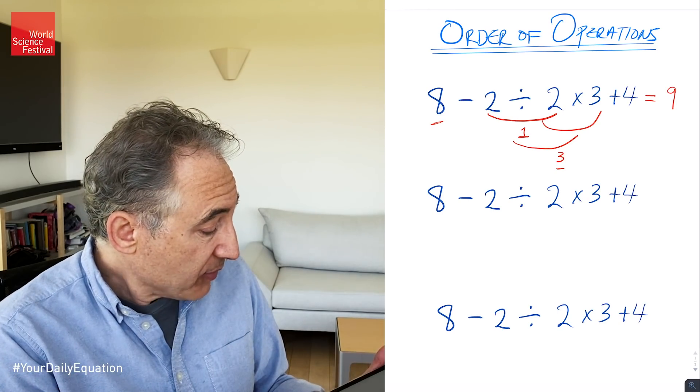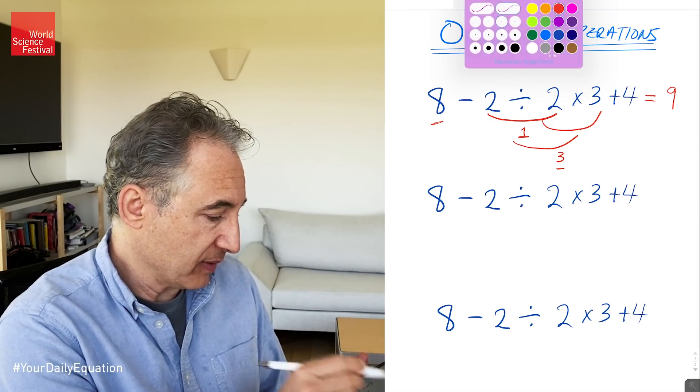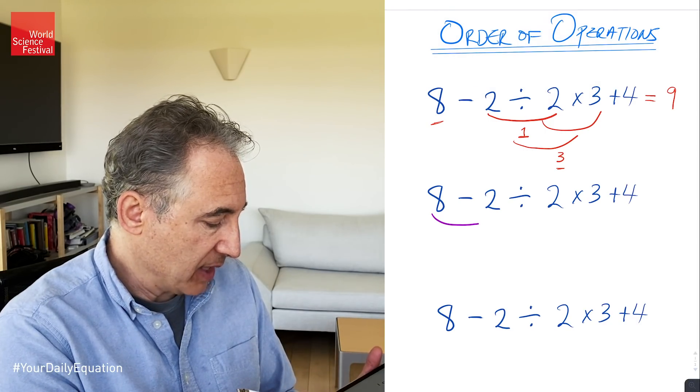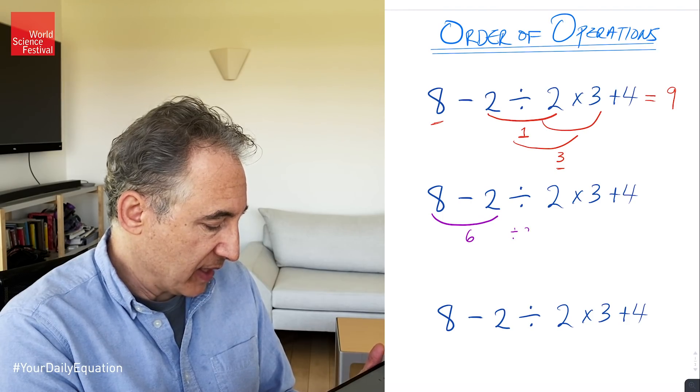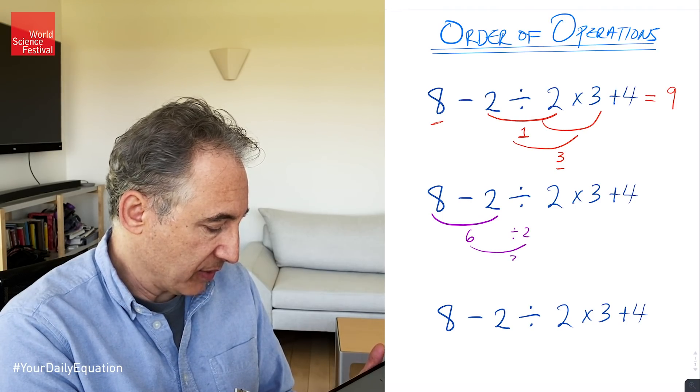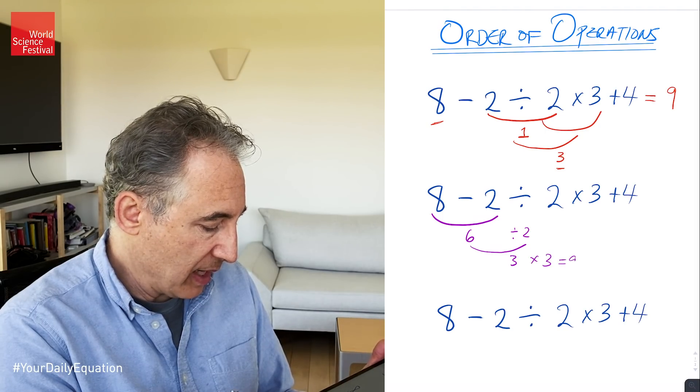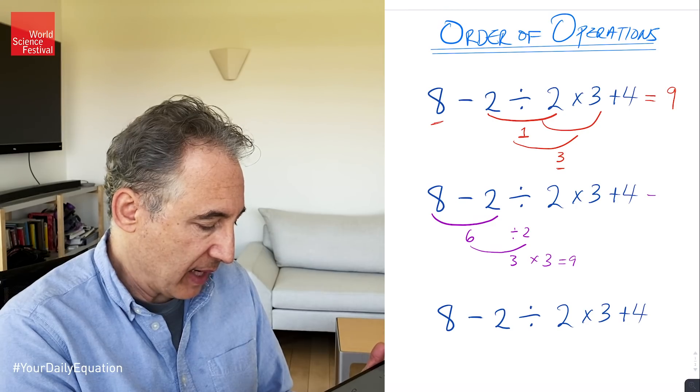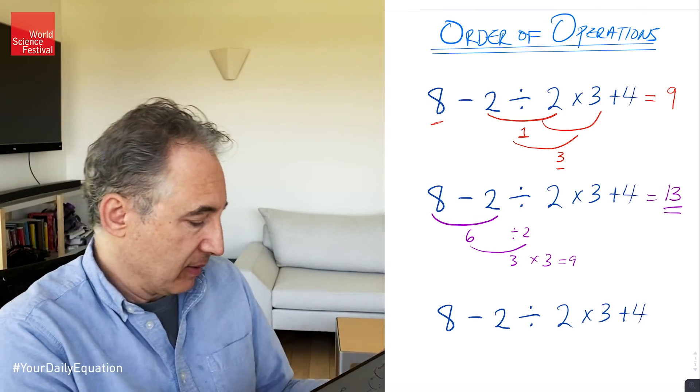That's one answer you'd get from interpreting the sentence, the mathematical sentence, in that manner. However, there are many other things that you could do. For instance, if we come over and let's choose a different color over here, if you did the 8 minus 2 first, you'd get your 6. If you did your 6 divided by 2, that would get you a 3. If you then multiplied the 3 by the 3, that would give you a 9. And if you then added the 4 to that, that would give you 13 in this particular case.